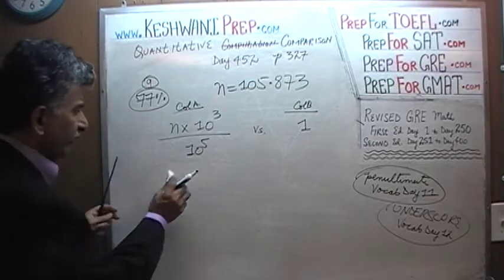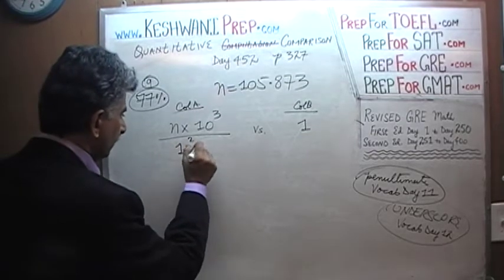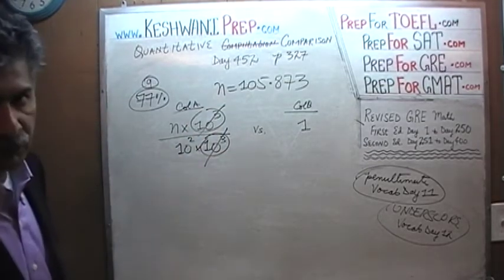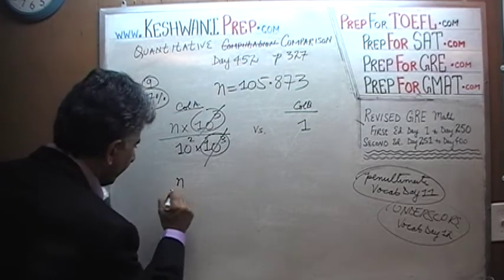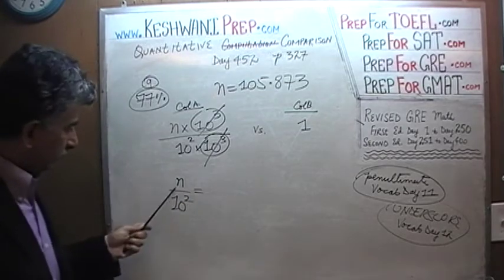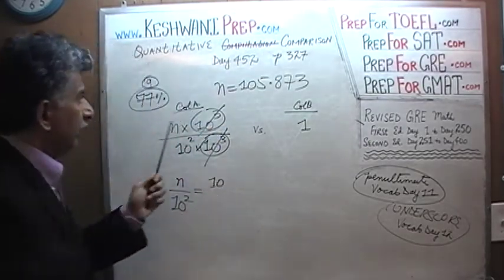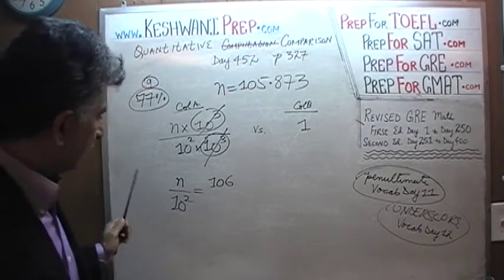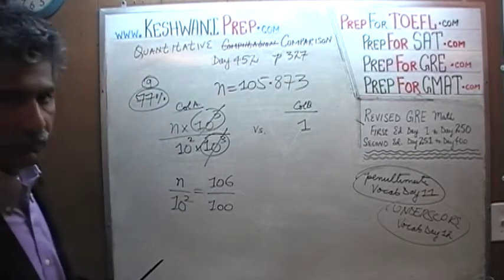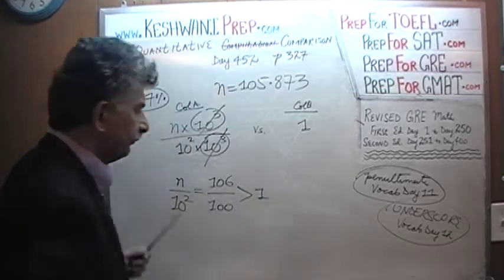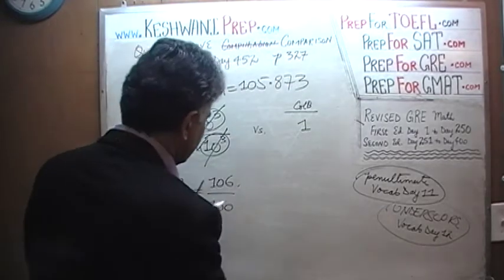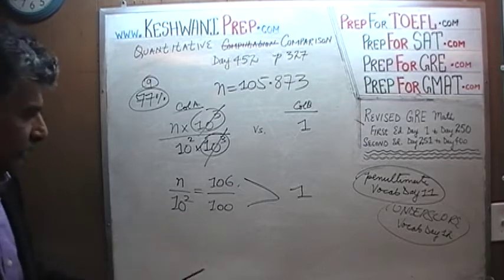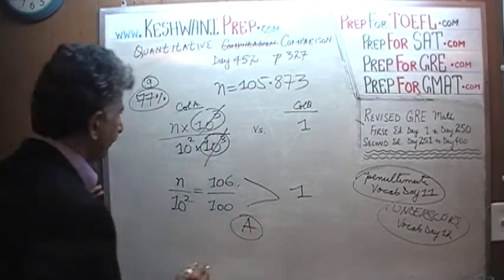10 raised to 5 can be written as 10 raised to 2 times 10 raised to 3. So we have 10³ on the top and 10³ on the bottom — divide top and bottom by 10³ and they cancel. What we end up with is n over 10 raised to 2. n is 105.873 — let's say approximately 106. So it's 106 divided by 100, which is of course more than 1, because 106 is more than 100 — the top is more than the bottom. The answer is A.